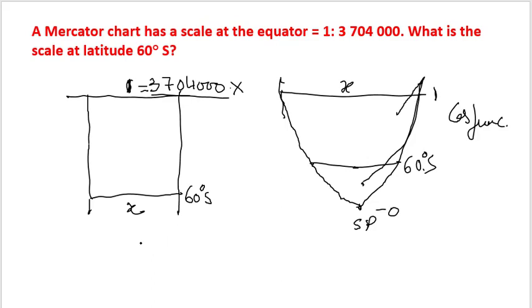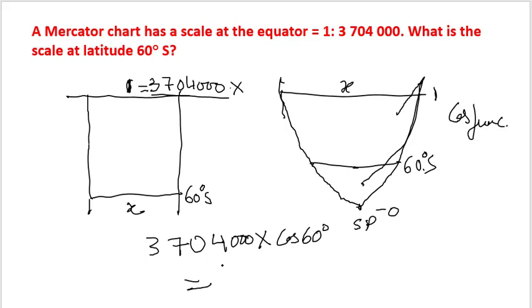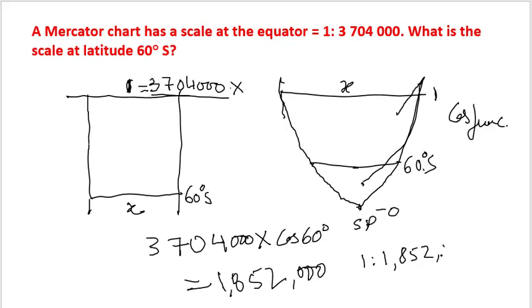So we multiply 3,704,000 by cos 60, which equals 1,852,000. That is the answer. So the ratio would be 1:1,852,000, and the closest option would be option A.